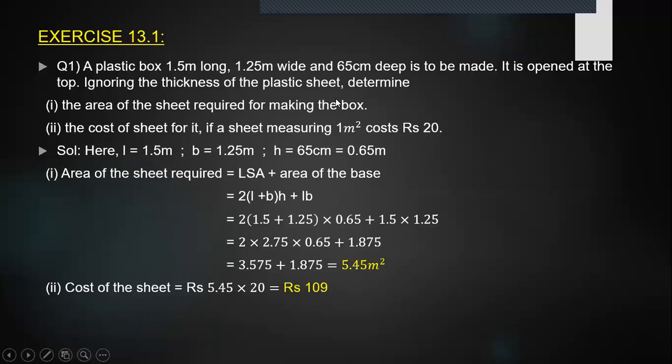Now, there are two important observations in this question. The first one is that two of the units are given in meters and the third unit is given in centimeters. So once you start the calculation, you must ensure that the units are uniform throughout. The second point to remember here is, it says it is opened at the top. That means the top surface does not exist. So effectively, there are only five surfaces to be considered in this box.